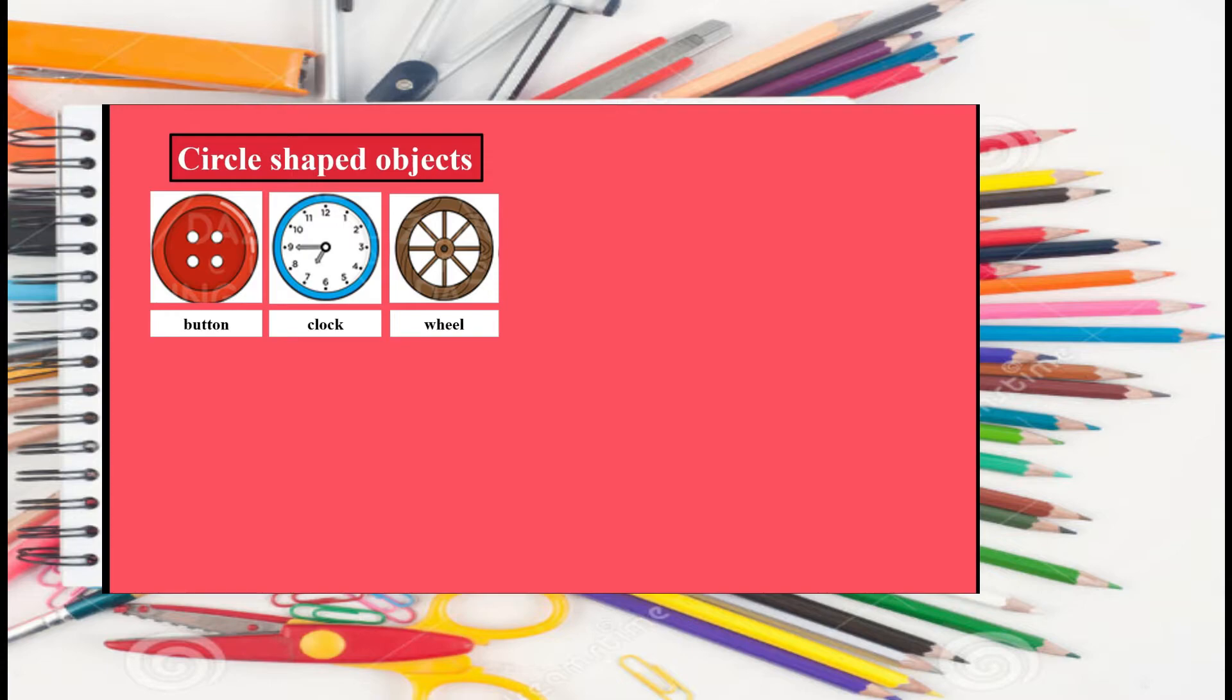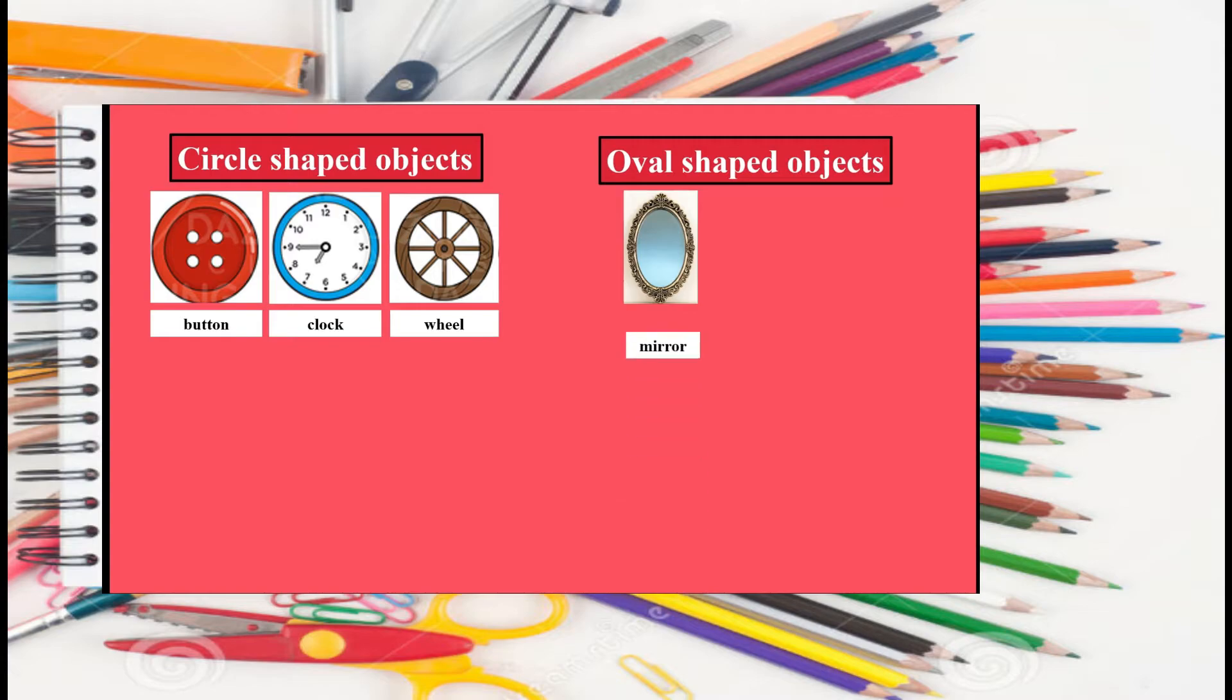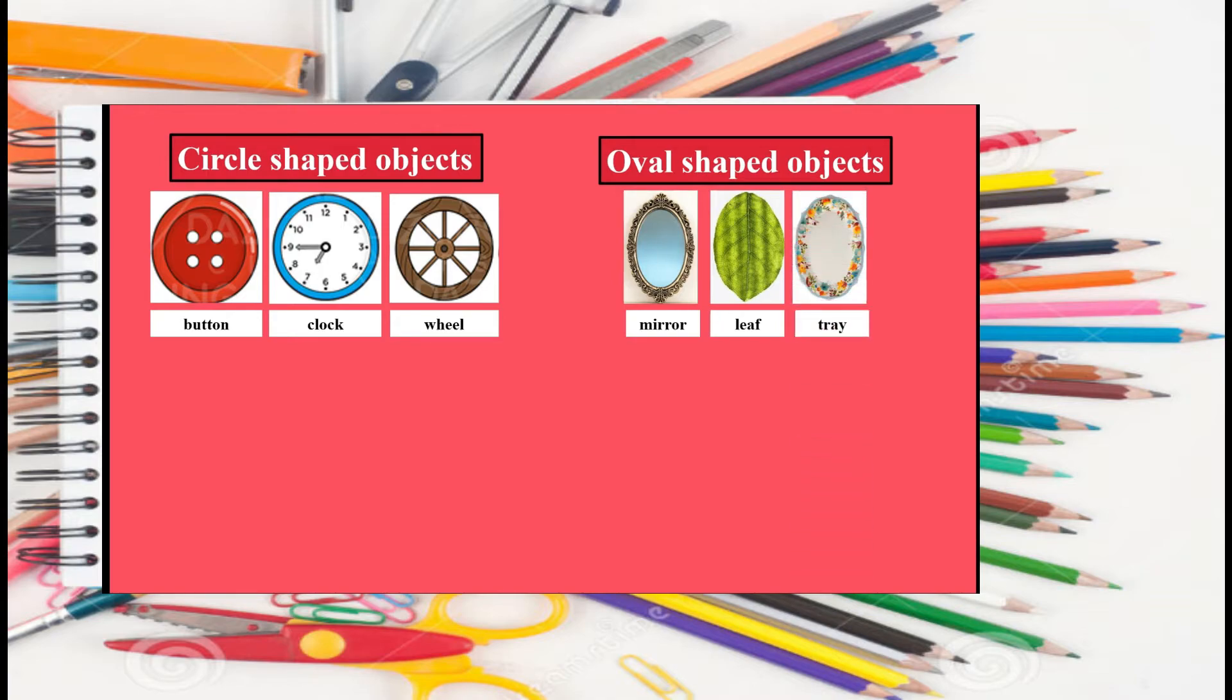Now, let's see the examples of oval shaped objects. What is this? It's a mirror. What's this? It's a leaf. What's this? It's a tree.